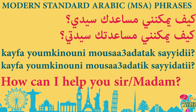Let's break it down. كيف means 'how.' يمكنني means 'can I' or 'I can.' So كيف يمكنني means 'how can I?'